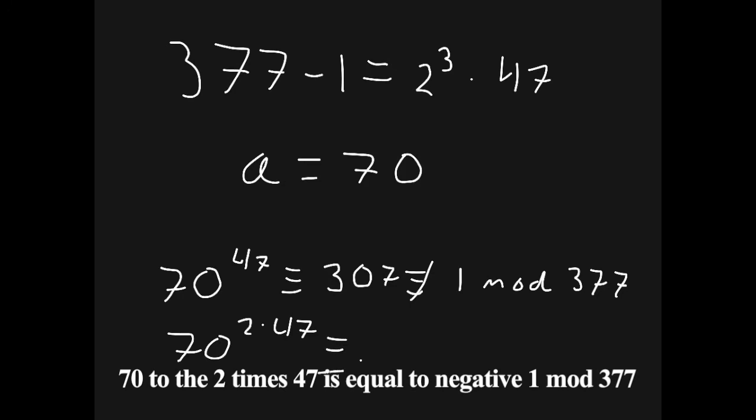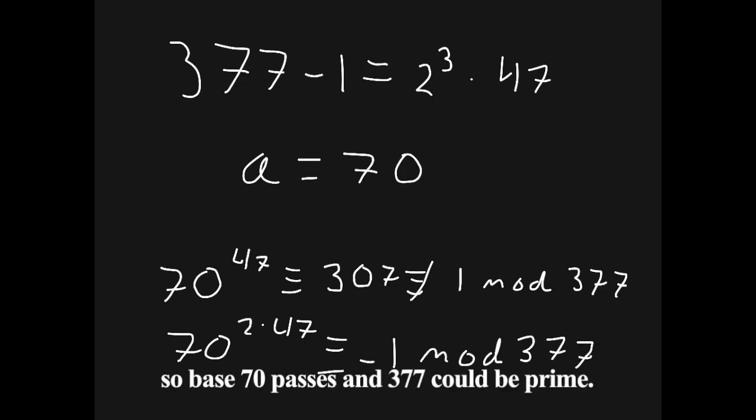70 to the 2 times 47 is congruent to 9, which is not negative 1 mod 377. Let's try another random number.